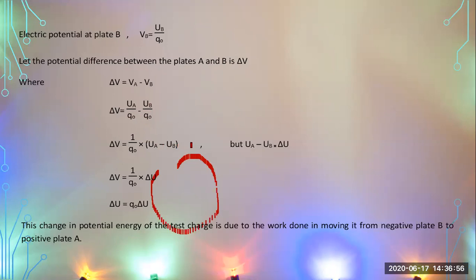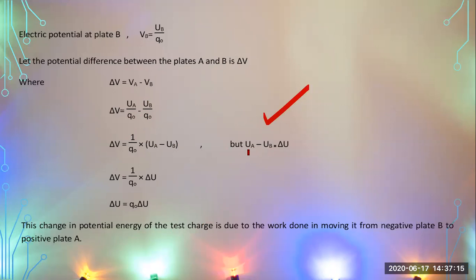The difference in electric potential equals (U_A minus U_B) divided by q-naught. U_A minus U_B is the difference in potential energy between plate A and plate B. U_A is the higher potential energy and U_B is the lower potential energy. This represents the maximum work done minus the minimum, which equals the change in potential energy ΔU.